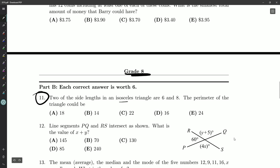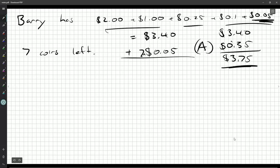Two of the side lengths in an isosceles triangle are 6 and 8. The perimeter of the triangle could be... So how do isosceles triangles work?